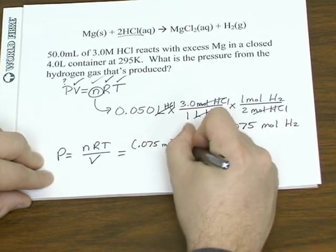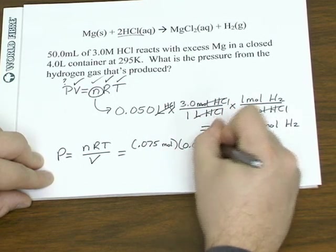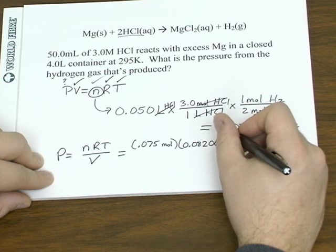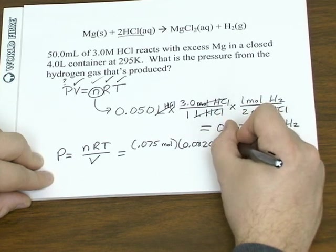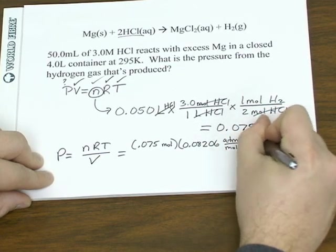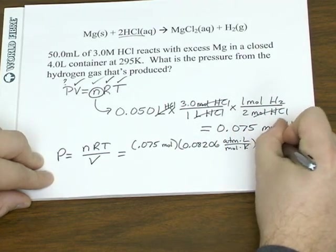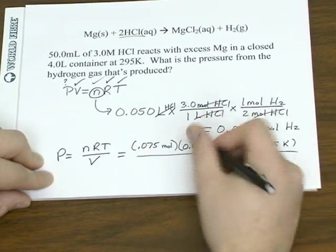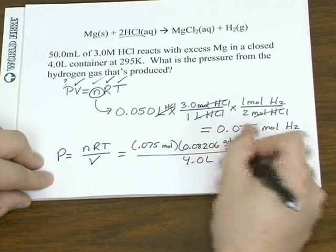So we've got that many moles. The gas constant, again, is 0.08206 atmosphere liters over mole Kelvin. Temperature's 295 degrees in units of Kelvin. And our volume is 4 liters.